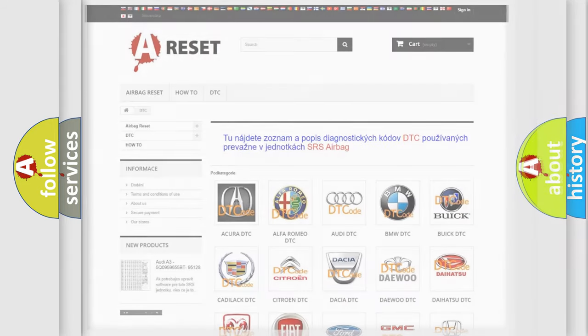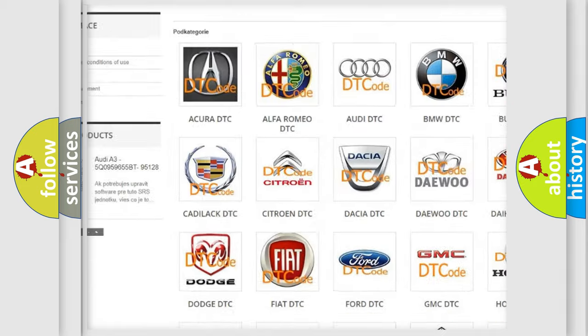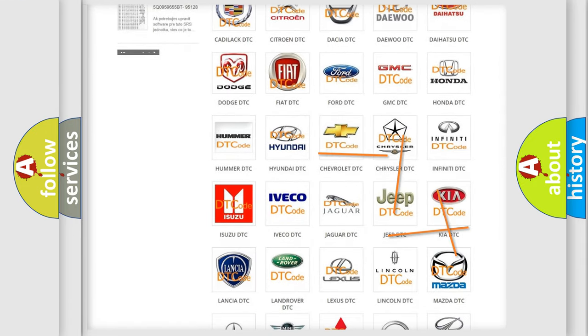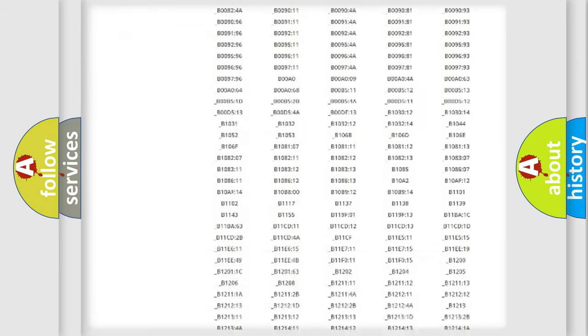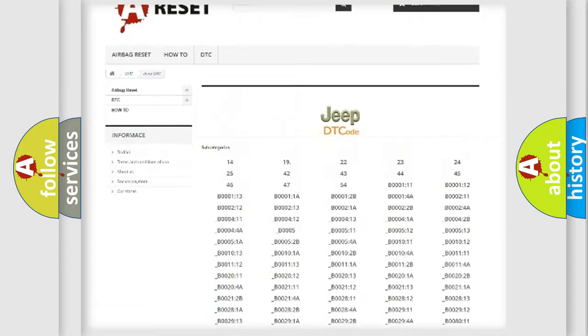Our website airbagreset.sk produces useful videos for you. You do not have to go through the OBD2 protocol anymore to know how to troubleshoot any car breakdown. You will find all the diagnostic codes that can be diagnosed in Jeep vehicles.